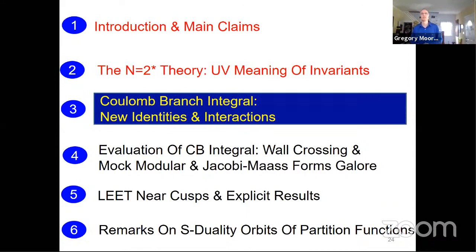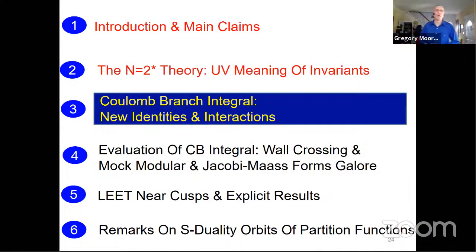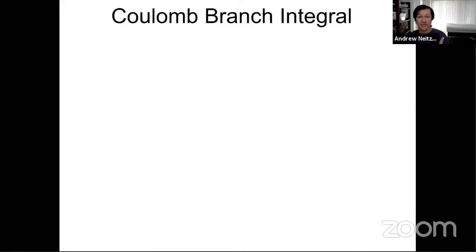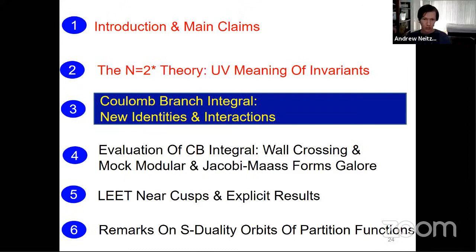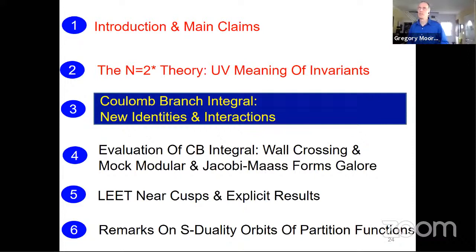There's a question from Samira Murthy: what picks holomorphic as opposed to anti-holomorphic? That's an orientation question. I said at the beginning that my manifold was oriented, and that orients spinors. So that choice of orientation is what chooses tau naught over tau naught bar. It's an excellent question.